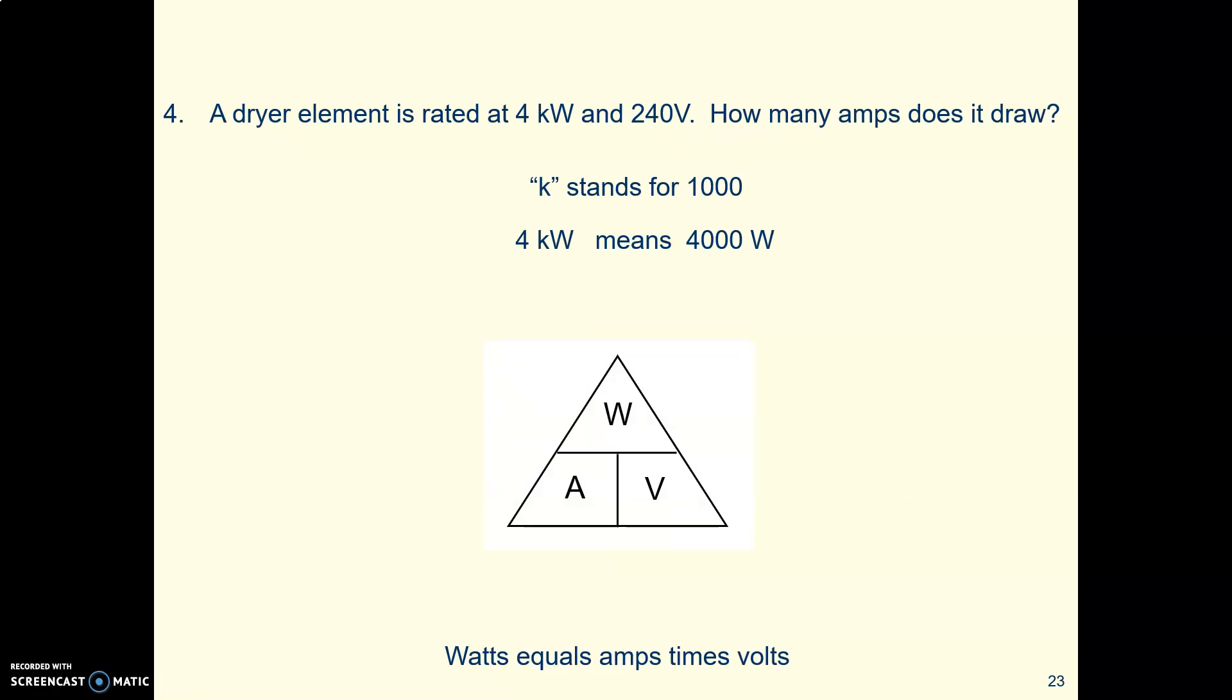Here's the fourth problem. It says you've got a dryer element. That means a clothes dryer. This is an electric dryer for drying clothes. It's rated at 4 kilowatts and 240 volts. A kilowatt, K stands for 1000. So when it says 4 kilowatts, that means the same thing as 4000 watts. So this dryer element is 4000 watts. And big electric heating elements like you find in stoves and electric dryers don't run on 120 volts. We've wired it to the 240 volt circuit. The question is, how many amps does it draw? Because we want to know how big a wire do we need and how big a breaker do we need?